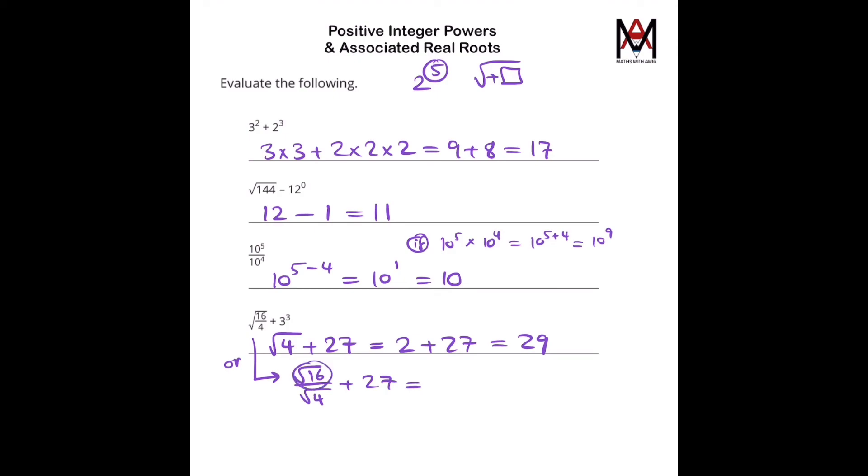So that's square root of 16 is 4 over square root of 4, which is 2, plus 27. That's again, 2 plus 27 is 29.